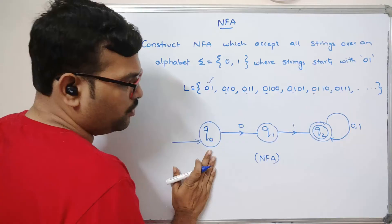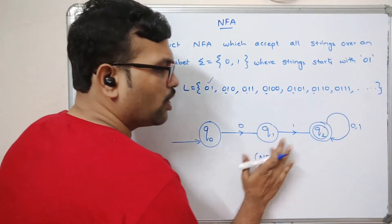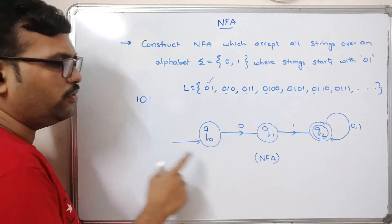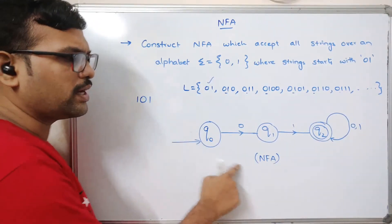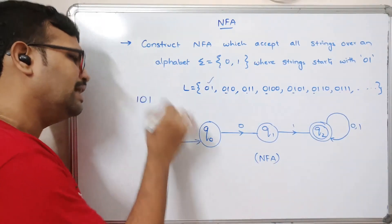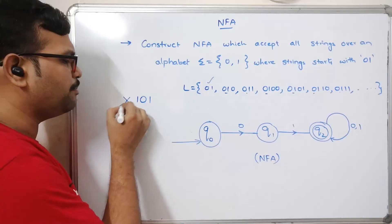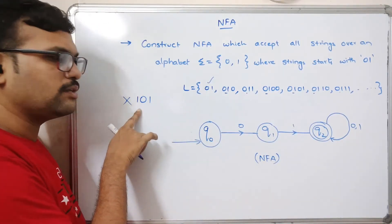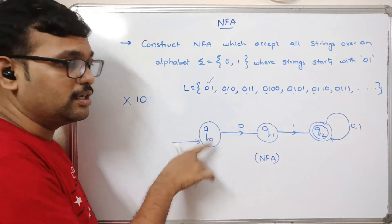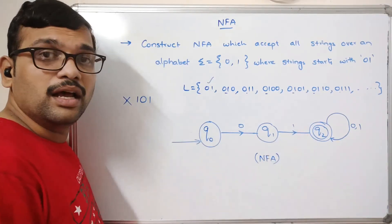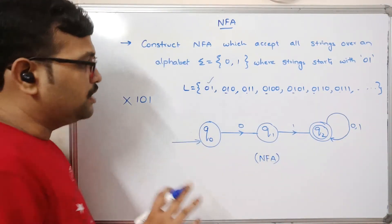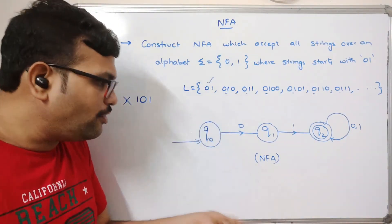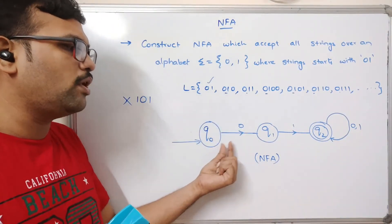If the string is '01': Q-naught on 0 moves to Q1, Q1 on 1 moves to Q2 — accepted. If the string is '101': Q-naught on 1 has no transition, so the string is rejected. We need not define the transition for Q-naught on 1. This is what distinguishes NFA — in DFA, every state must have a transition for every input symbol.